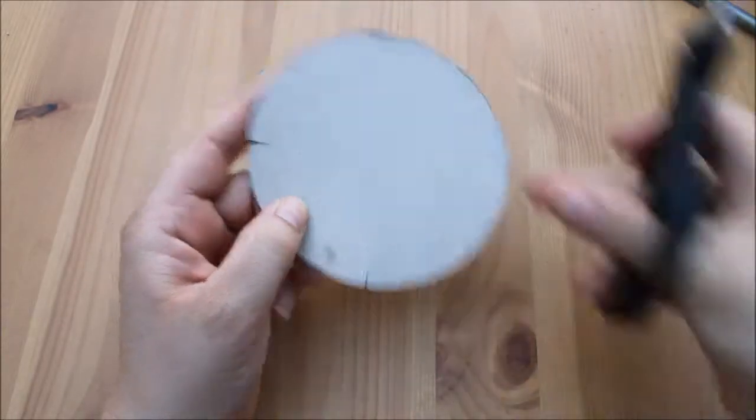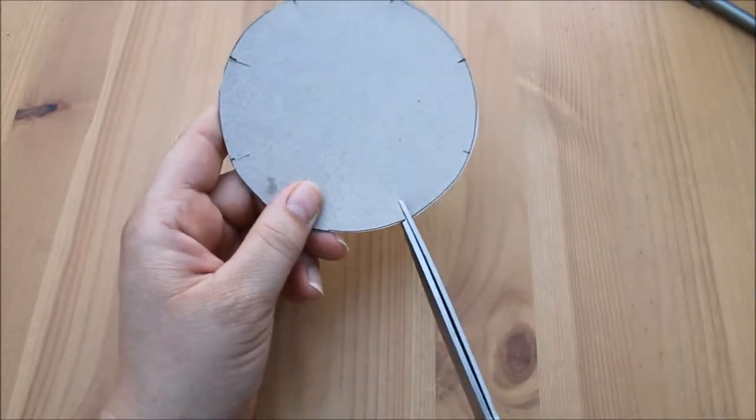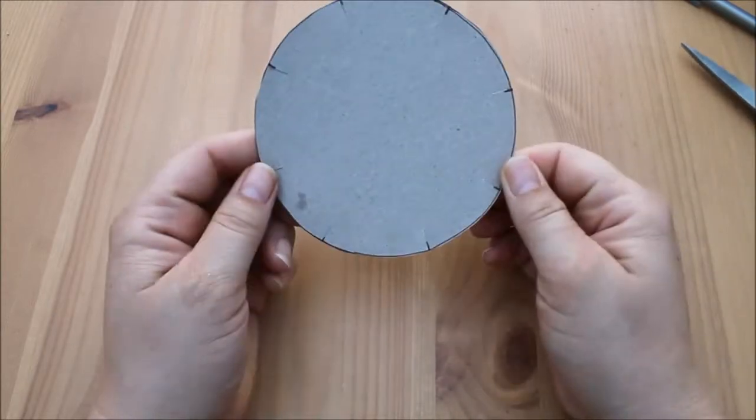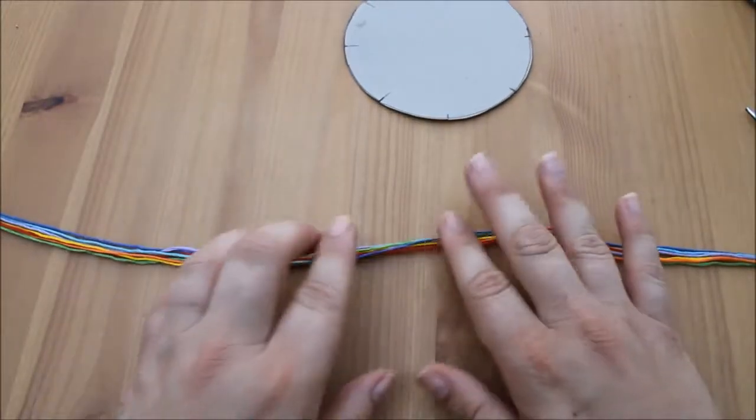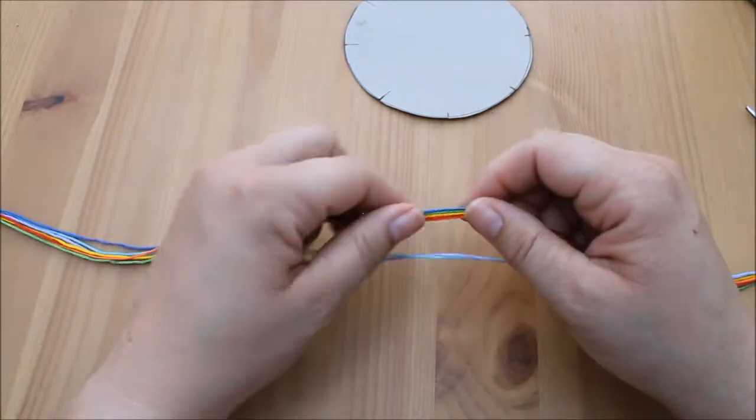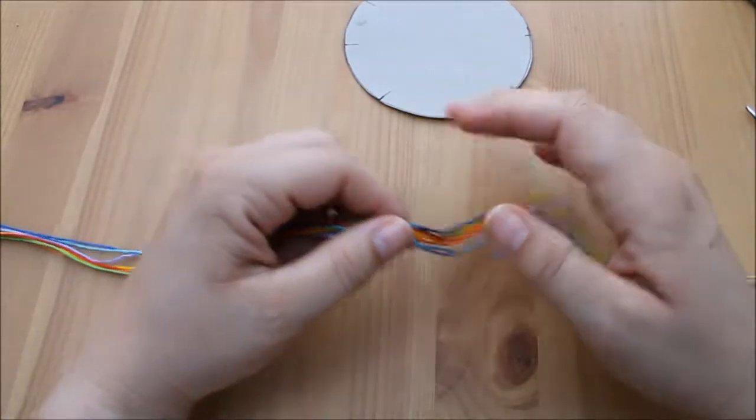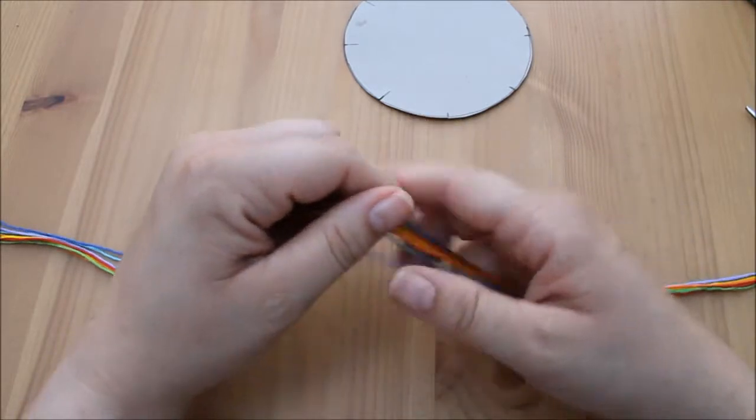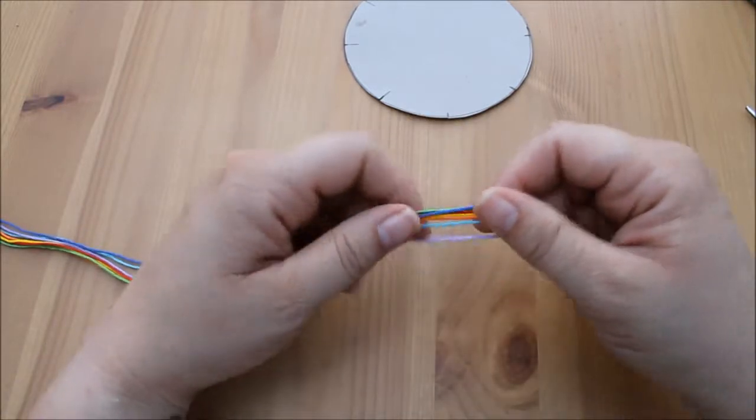We then want to take seven strands of our chosen yarn. You can use any yarn for this, but I choose to use embroidery floss because it's easier to work with and I do think it looks much neater when the product is finished.